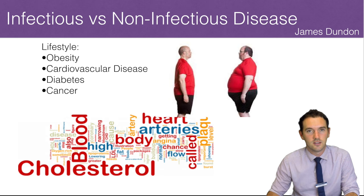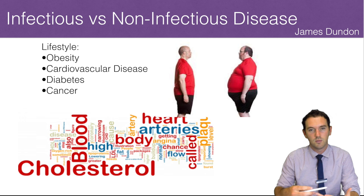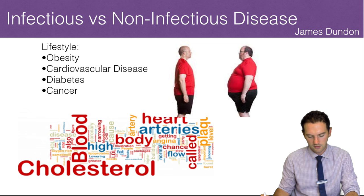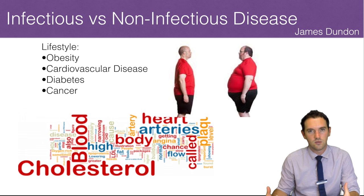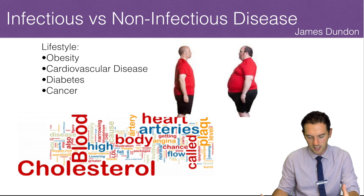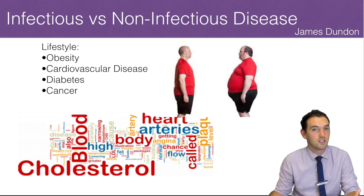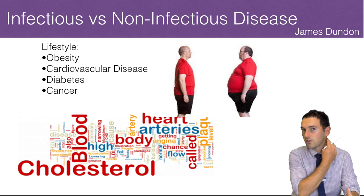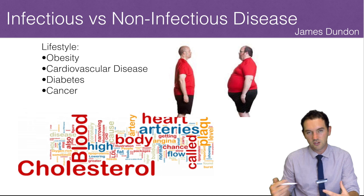And the final one: lifestyle. This is all about the decisions that you're making — diet, exercise, what you put into your body, alcohol, smoking, those types of things. We've got obesity, cardiovascular disease — issues with specifically the heart and the blood vessels surrounding the heart — diabetes, where the pancreas is struggling to produce insulin or the receptors responding to insulin are no longer responding the way they should, and that's generally from overeating. And cancer as well.